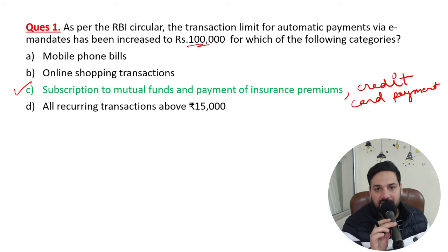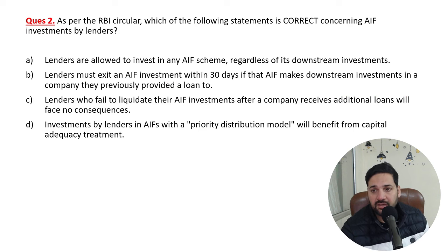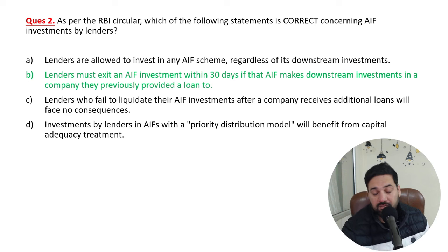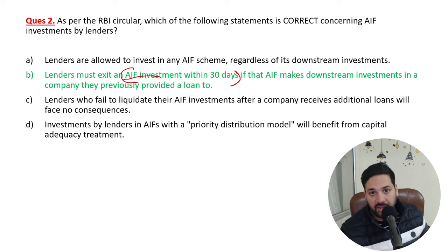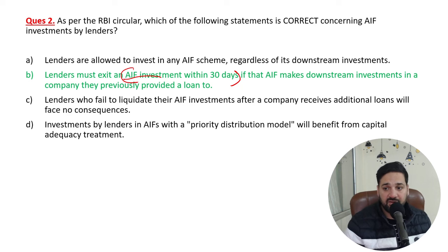Regarding the RBI circular on Alternative Investment Funds (AIF): lenders — financial institutions, banks, and NBFCs — are NOT allowed to simply invest in any AIF scheme freely. As per the very recent news, lenders must exit an AIF investment within 30 days. If they do not exit within 30 days, they need to make a provision of the same amount.